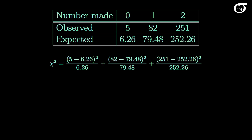Comparing the new expected counts to what was observed: on 251 occasions Larry Bird made both free throws, and under this null hypothesis we'd expect 252.26 — very close. At 0, he missed both 5 times and we'd expect 6.26 — also fairly close. To my eye these observed counts are quite close to the expected counts, indicating little if any evidence against the null hypothesis, but we should carry out the formal test.